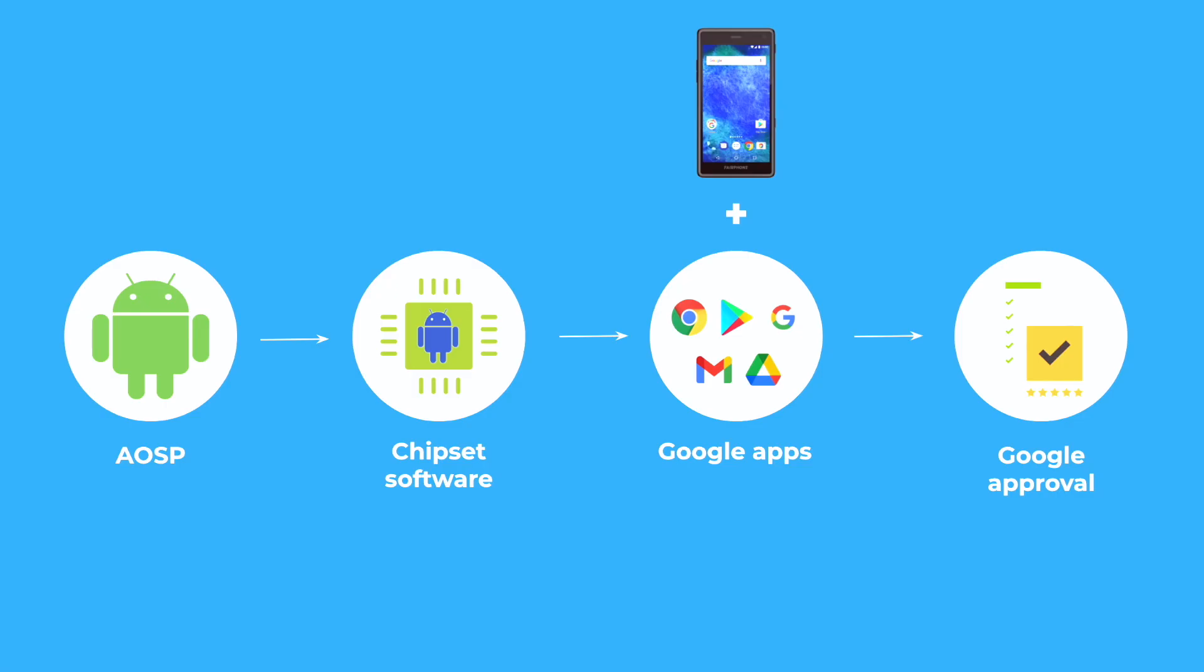Android is released by Google through AOSP, the Android open source project. Chipset vendors such as Qualcomm take the code from AOSP and modify it further to make it run on their chipsets. Then, we take the code from the chipset vendors and modify it so that it runs on our specific phones. For example, on the Fairphone 2, we made sure that Android works well together with our specific camera modules.